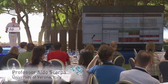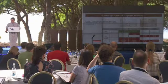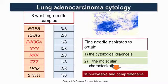We used eight lung adenocarcinoma cytology cases, and as you can see we find more mutations than eight because we can find more than one mutation per case. The red ones are important for potential therapy with targeted therapies.